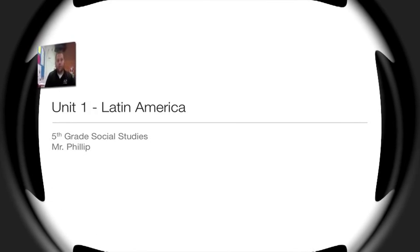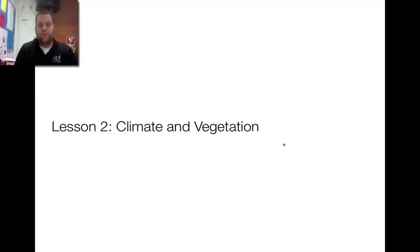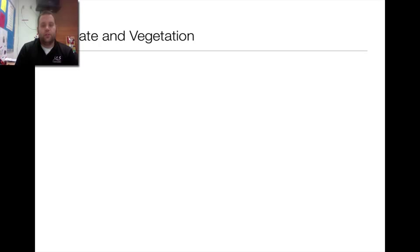Hey, fifth grade. Welcome to your second podcast. This one is lesson two on vegetation and climate. The change from last time is that I took out the vocabulary and objectives of the lesson, because hopefully you'll pick up on those things and we'll do something else in class about those. So you don't need to write them down. We're just going to get straight to it.